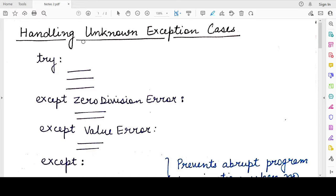So first, how to handle unknown exceptions. In the previous video, we have seen that when we write a try block and we know what kinds of exceptions might occur, then we write one except block corresponding to each of the known exceptions.